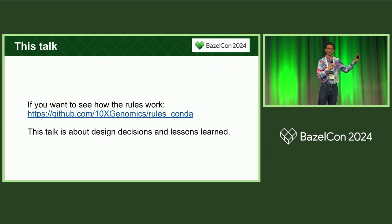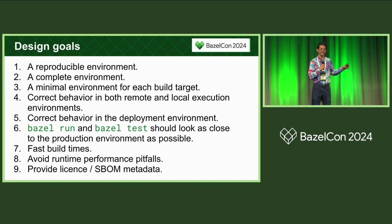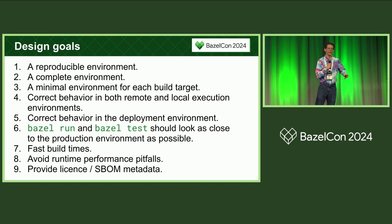If you actually just want to see how the rules work, just look at the GitHub repo — we've published them publicly. I'm going to mostly be talking about lessons learned from building that rule set. Our design goals were reproducibility — everybody at BazelCon knows why that's important. It needs to be a complete environment that actually works. It needs to be a minimal environment; we don't want to be bringing in lots of dependencies that aren't needed, especially if you're using remote build execution, because you don't want a gigantic input graph.